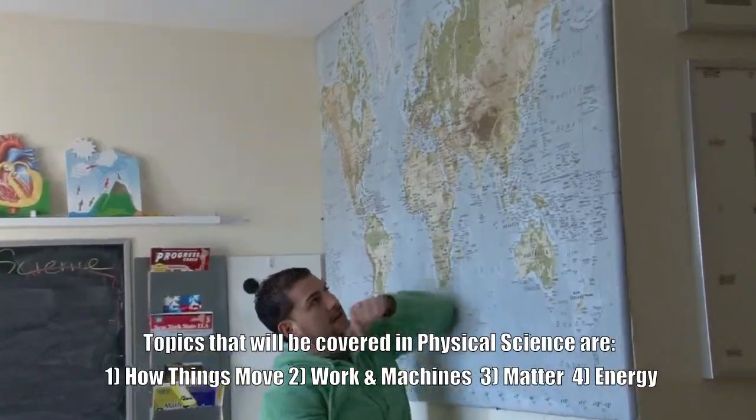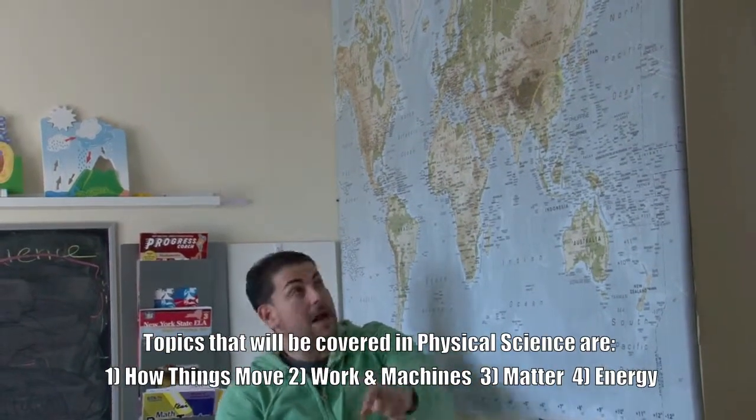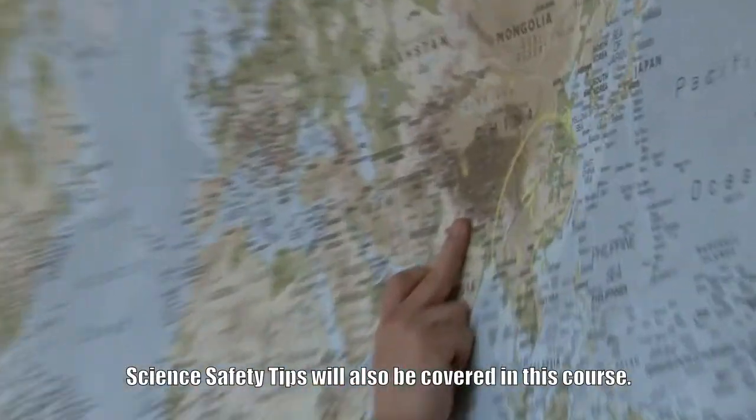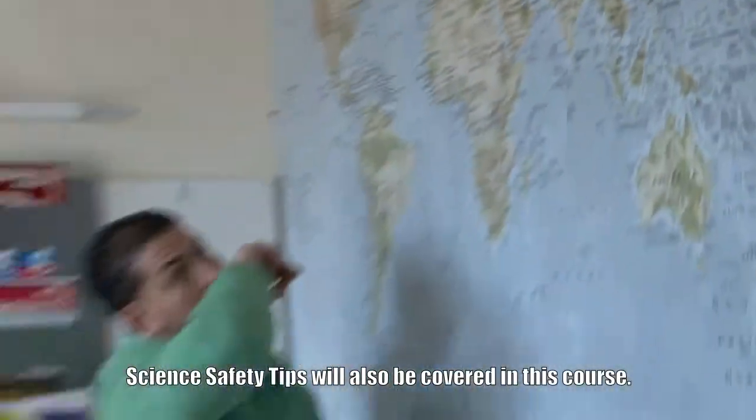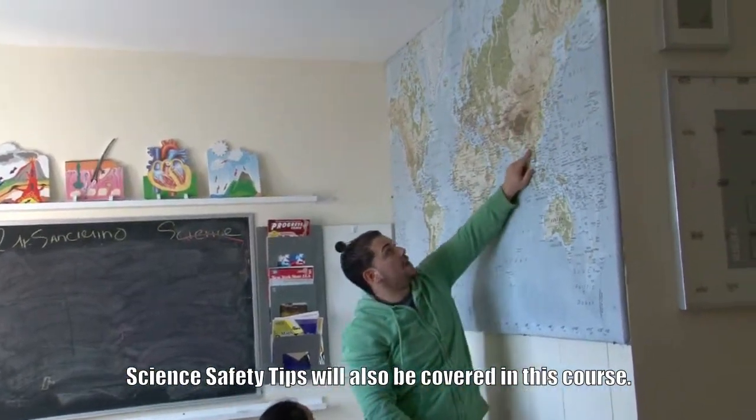China has four natural barriers. What's one natural barrier for China you just said? Mountains, right. What's the name of the mountains? The Himalayas. Does China have a desert? Yeah, what's it called? The Gobi.